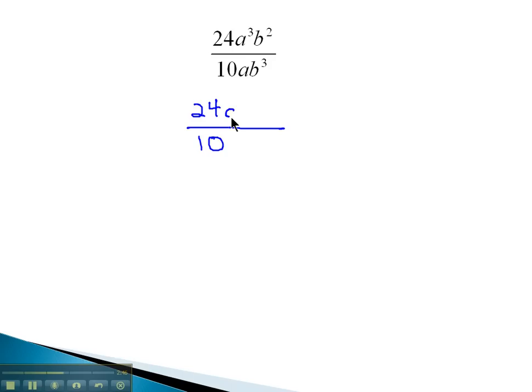In the numerator, a cubed is a, a, a, and b squared is b, b—three a's and two b's. In the denominator, there's an a and b cubed or b, b, b.